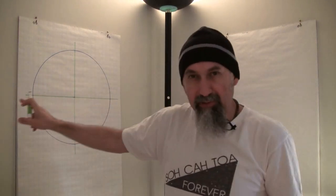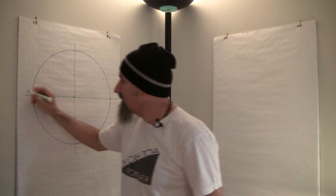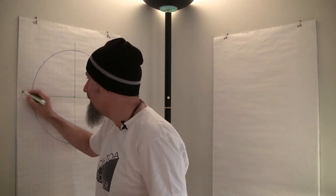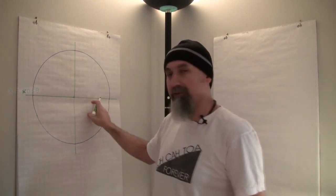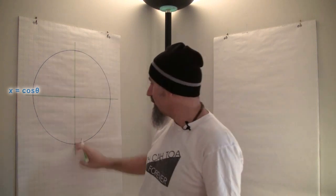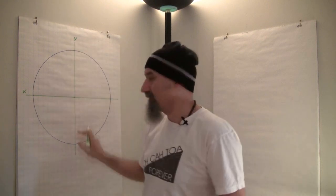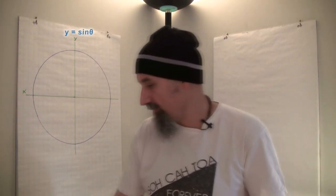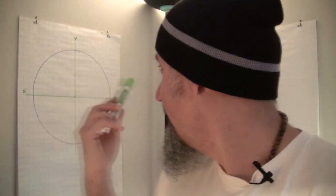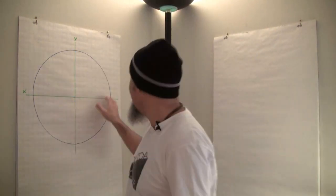We talked about this a lot. This is our X axis, and for a unit circle, this is going to be our cos theta. And this is our Y axis, and for a unit circle, we're basically going to call this sine theta. What we've done by creating this grid is broken this thing down into four quadrants — one, two, three, four — and that allows us to analyze the circle.